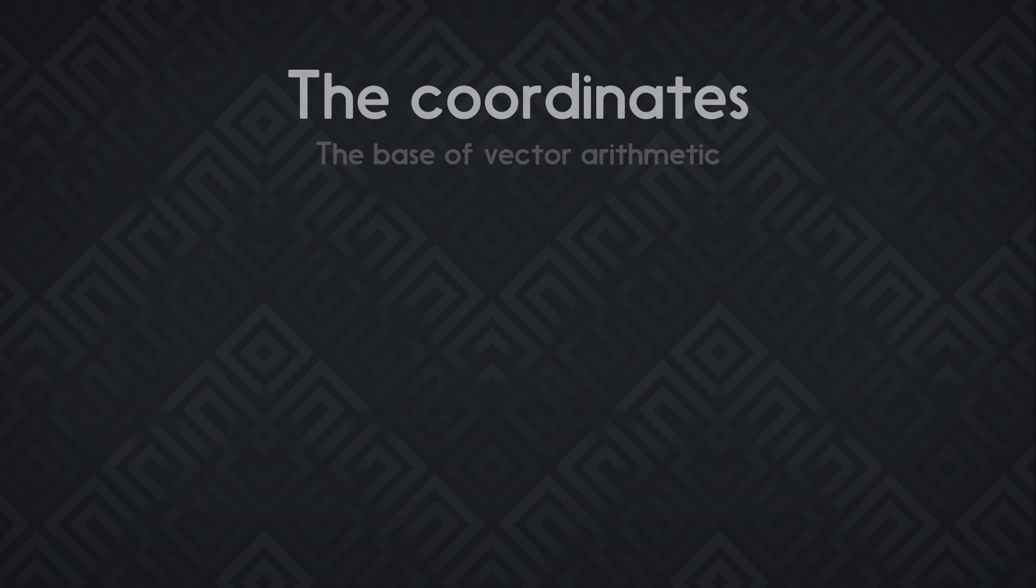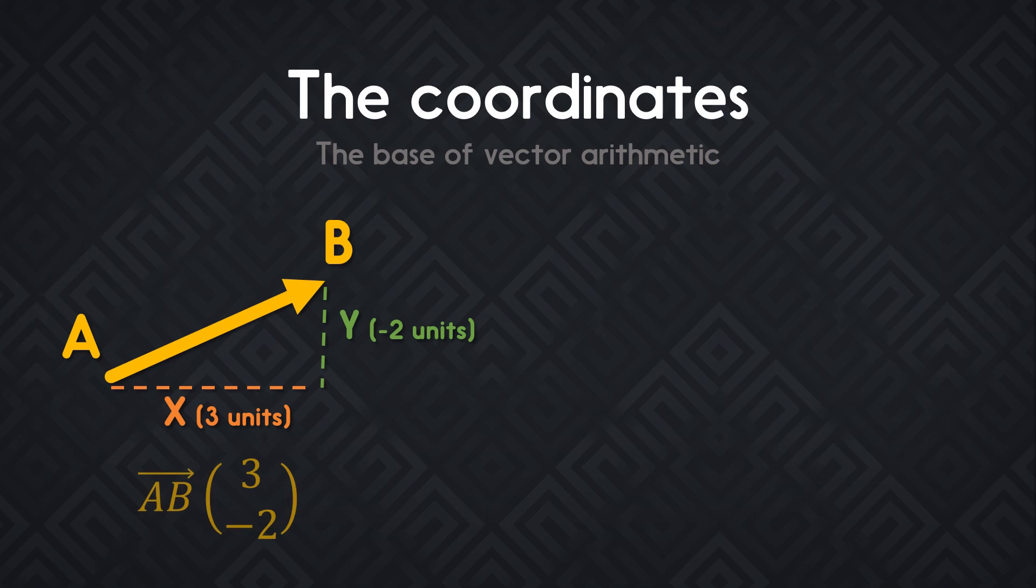So, you've seen we represent vectors with an arrow starting at one precise point and pointing towards another one. But for calculations, we actually represent them as a set of coordinates. On a plane in 2D, vectors have two coordinates, an x and a y coordinate. Just like points,